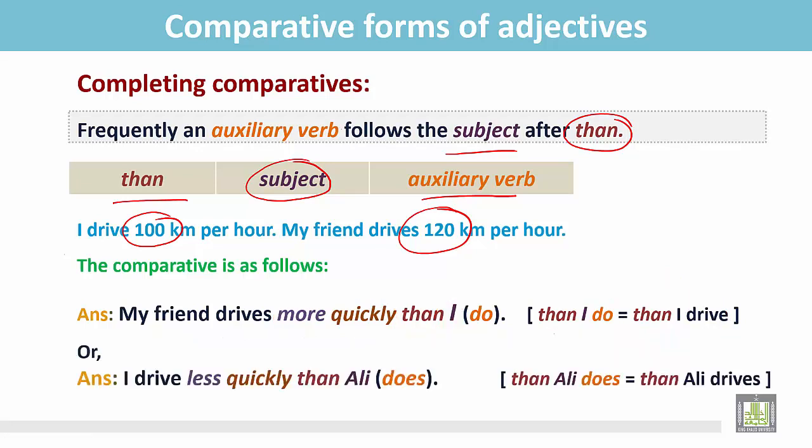Or we can write this way. I drive less quickly. I drive less quickly as I am driving at 100 km per hour, and my friend is driving at 120 km per hour. So, I drive less quickly than my friend Ali. And we write here, I drive less quickly than Ali does.